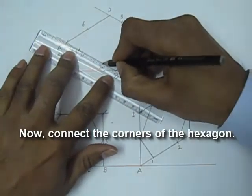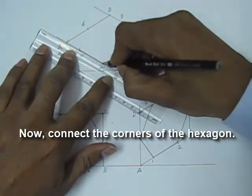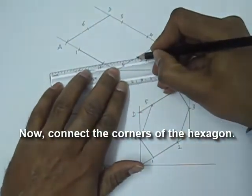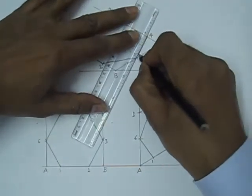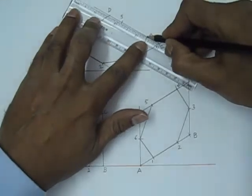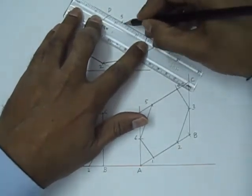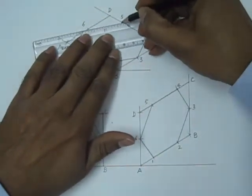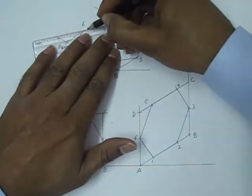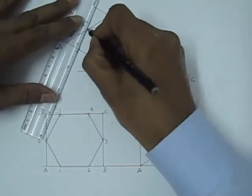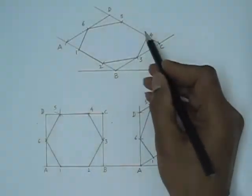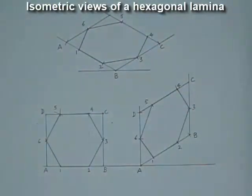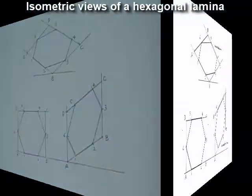Now we connect these corners. These are the corners of the hexagon. But now this will give us isometric view of the hexagon. So this new shape 1, 2, 3, 4, 5, 6 is the isometric view of the hexagon.